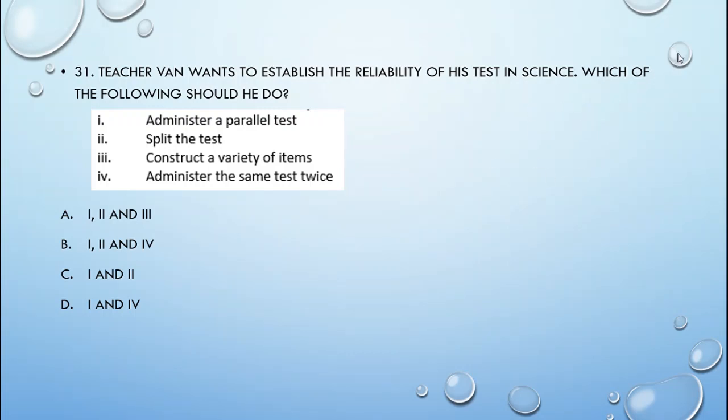Teacher 1 wants to establish the reliability of his test in science. Which of the following should he do? The answer is 1, 2, and 4. He either has to administer a parallel test, split the test, or administer the same test twice. 1, 2, and 4 are methods of establishing reliability.